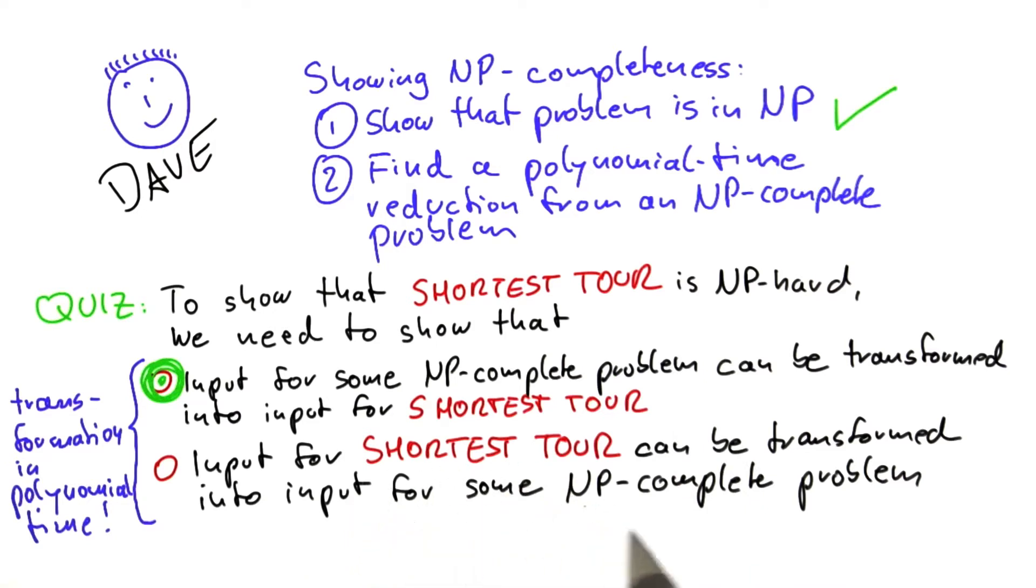Then you would just show that this NP-complete problem is at least as hard to solve as shortest tour. But that doesn't give you any statement about shortest tour. So this is the way we need to do the reduction.